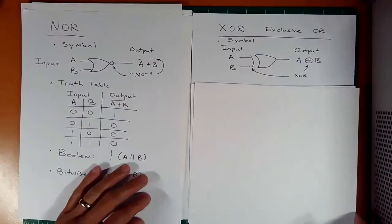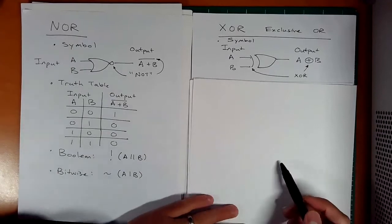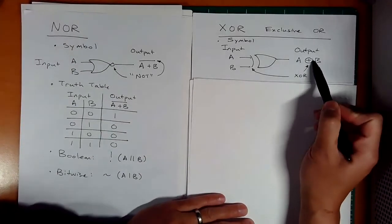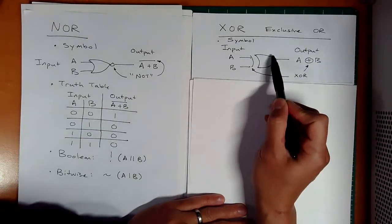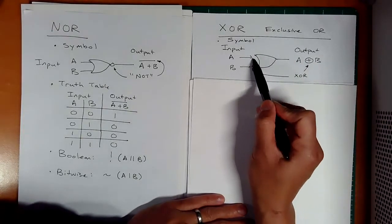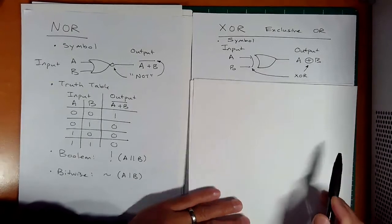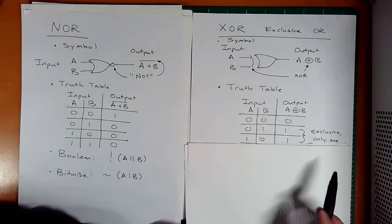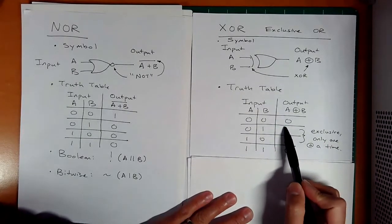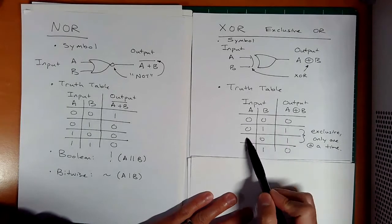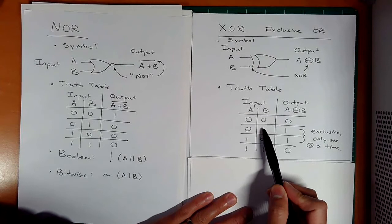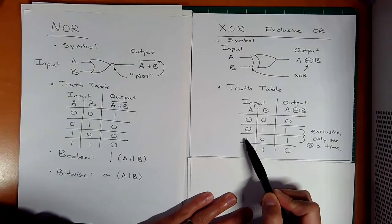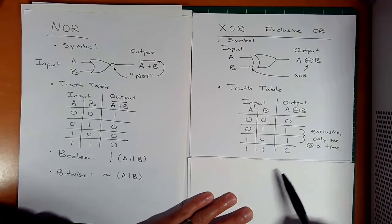The last one we want to do is the exclusive OR. We have the special exclusive OR operator here—a special plus. The symbol looks like that Star Trek symbol with an extra fin on the back. The truth table is basically exclusively only one is true at a time. If you have both true, it's zero. But if the one A is true or B is true, then we're good.